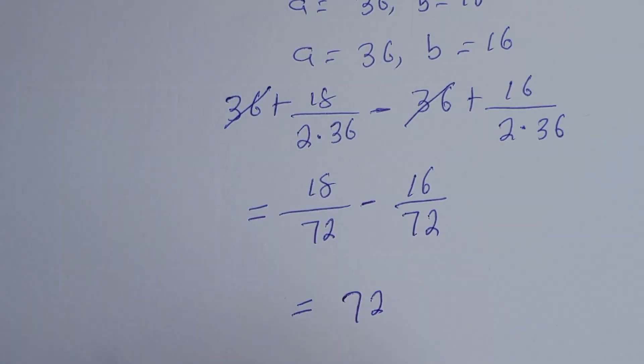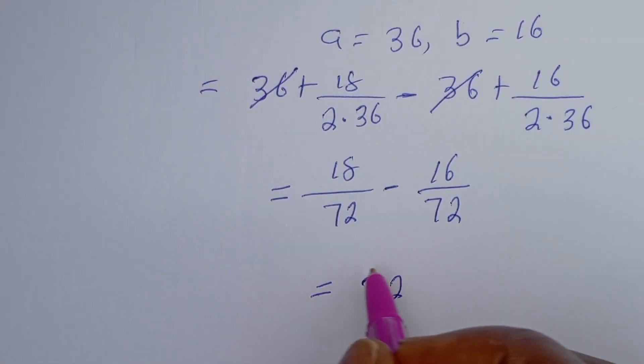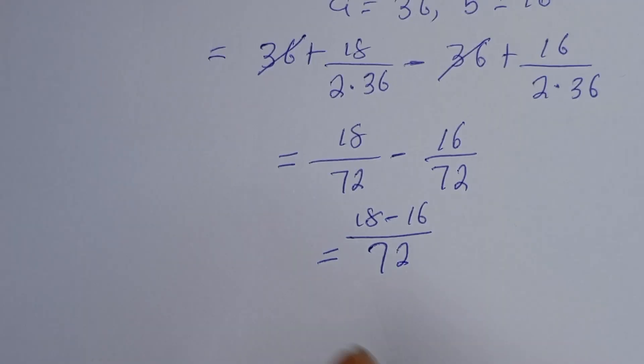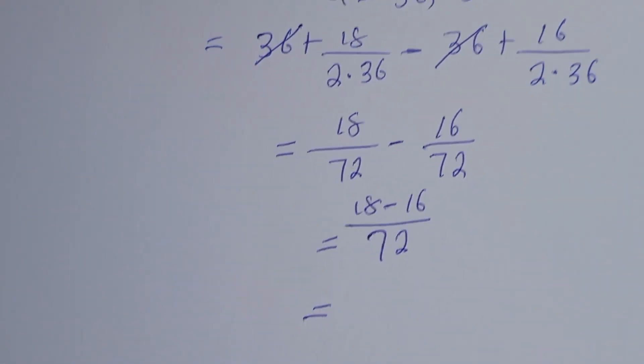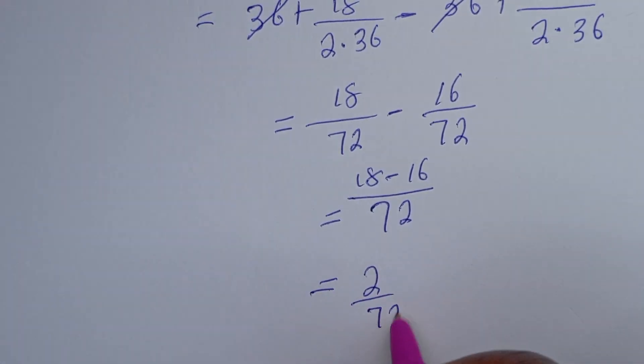Then 18 minus 16, this is equal to 18 minus 16, that is 2 over 72.